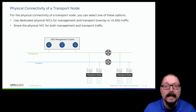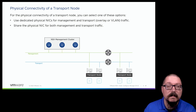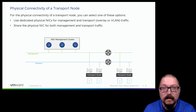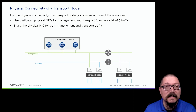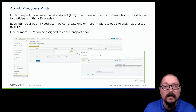We could connect to these using a shared set of NICs — for example, if my hypervisor only has two physical NICs, I'd need to share them between management and transport networks. But if I had enough NICs, I could dedicate two physical NICs to management and two to transport networks. So we can use dedicated or shared NICs depending on what's available on our hypervisors.